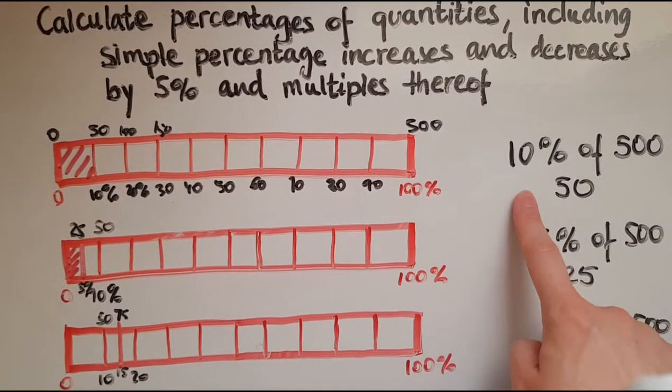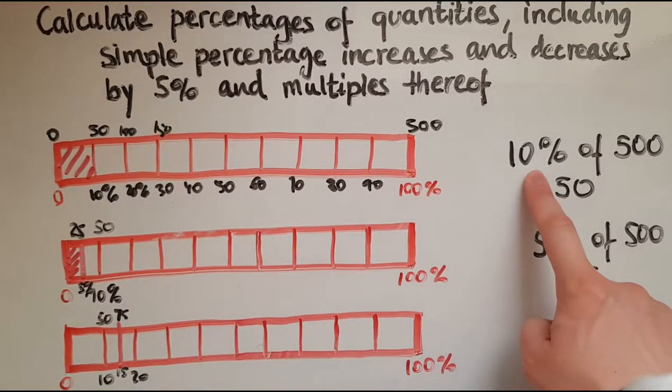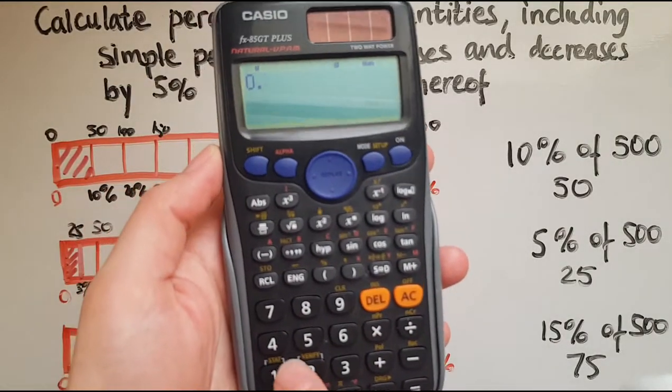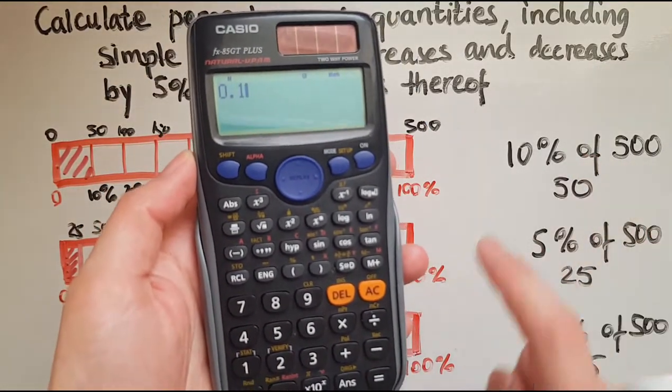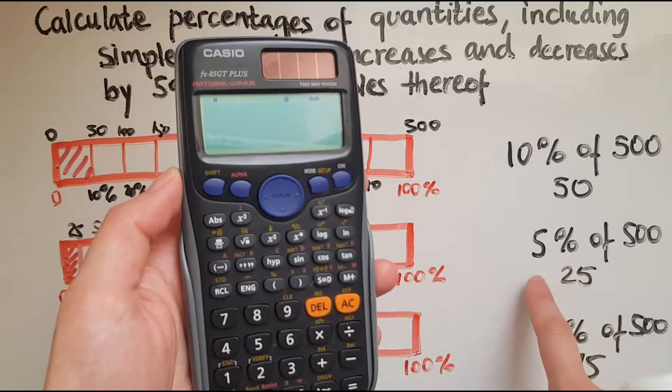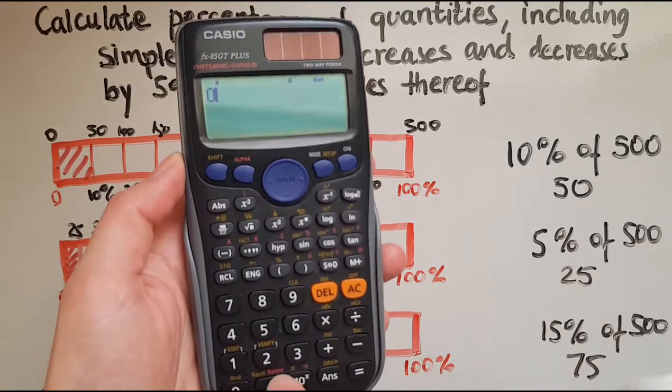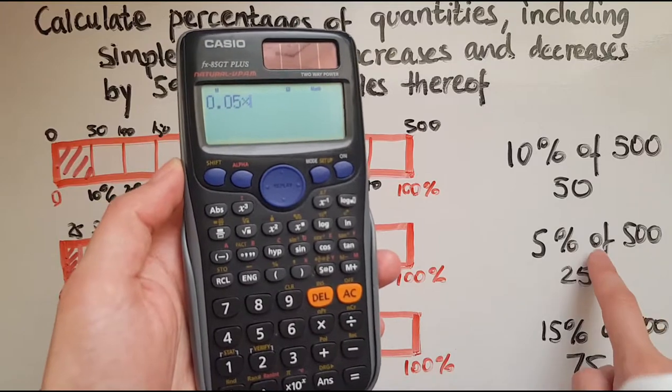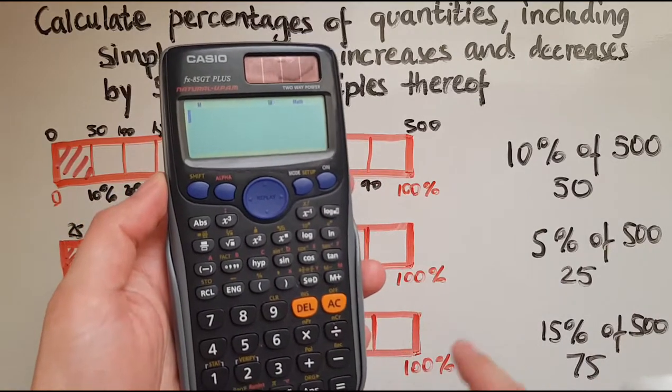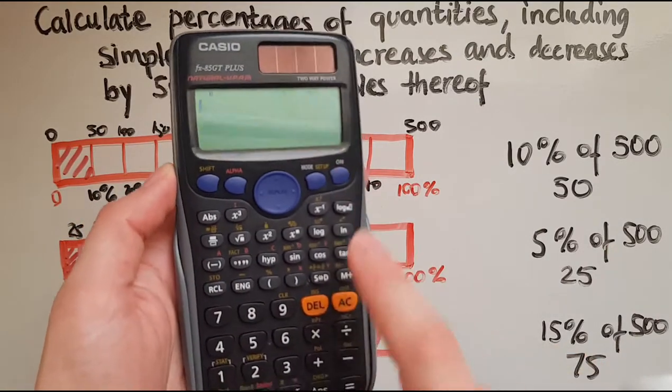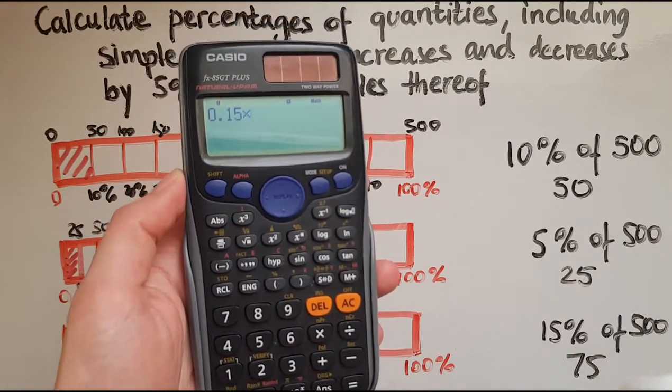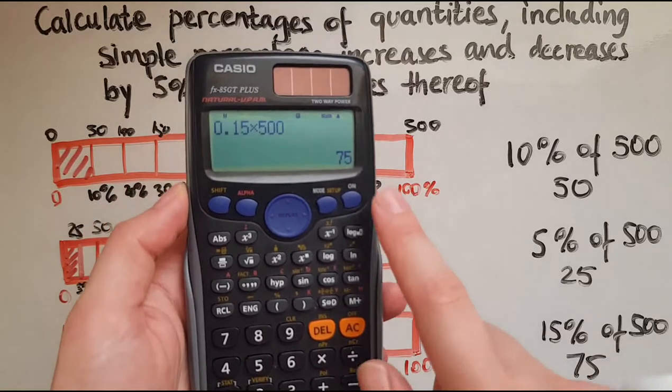So the shorter way to work it out would be: 10%, which I can write as 0.1, 0.1 times 500, that gives me 50. And the same thing. 5%, like 5 pence, 0.05 times 500, that gives me 25. And 15%, I write as a decimal, 0.15 times 500, that gives me 75.